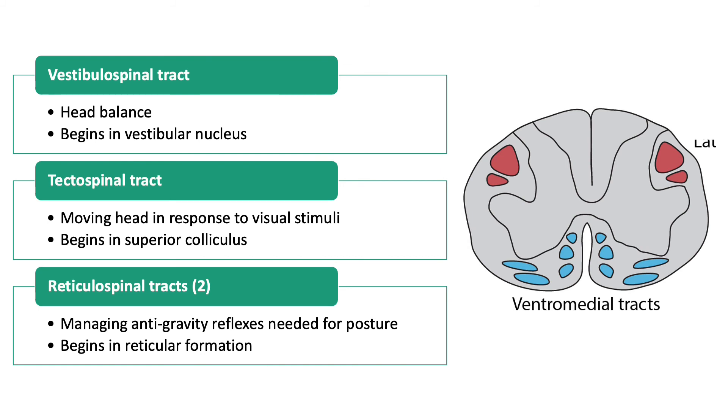The vestibulospinal tract is important for head balance as we move. This tract begins in the vestibular nucleus. The tectospinal tract is responsible for moving the head in response to visual stimuli. This tract begins in the superior colliculus. The two reticulospinal tracts play a role in managing anti-gravity reflexes needed for posture and standing. These tracts begin in the reticular formation.